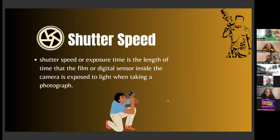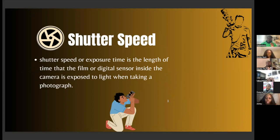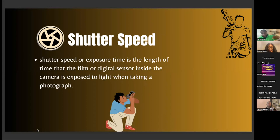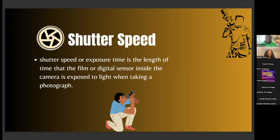Shutter speed, or exposure time, is the length of time that the film or digital sensor inside the camera is exposed to light when taking a photo. Your shutter speed is the amount of time it takes to freeze an object in your camera. For faster objects, you want a faster shutter — anywhere from 1/65th to 1/350. For video at 24 frames per second, you're typically shooting at 1/48 or 1/50. When you see movies, they're mostly shooting at 24 or 60 frames per second — that's how fast the camera is capturing images.